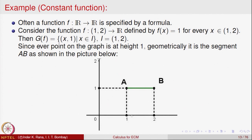For this function, the domain is the open interval (1, 2), the range is the single point {1}, and the co-domain is R. It is not 1-1 because all points in the domain map to the same value 1. It is also not onto since the range is just {1}, not all of R. So this function is neither 1-1 nor onto.